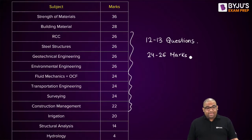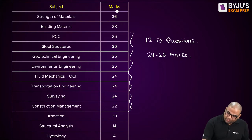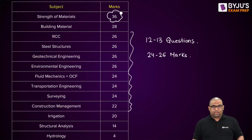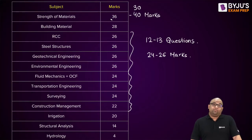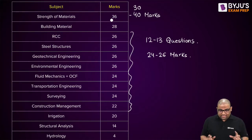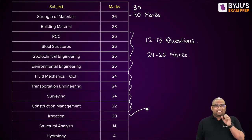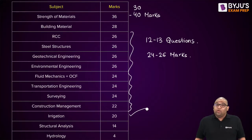Strength of Materials is the highest — over the years they have sometimes asked even 40 marks, so I would say 30 to 40 marks can come from Strength of Materials alone. There are three more subjects to note: Irrigation is also around 20 marks, and it is asked very less in GATE — only one question — but in ESC prelims it is 10 questions, 20 marks. Structural Analysis is relatively less but certainly not zero, and Hydrology is very less — over the last six years they ask either one or two questions from Hydrology.